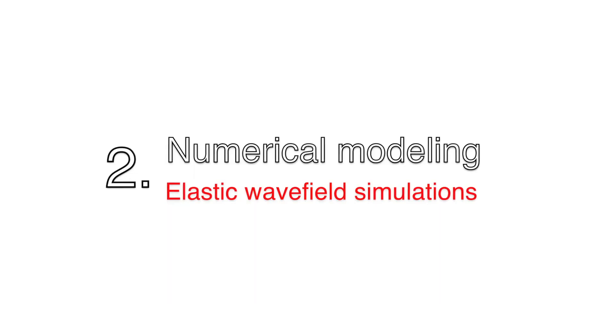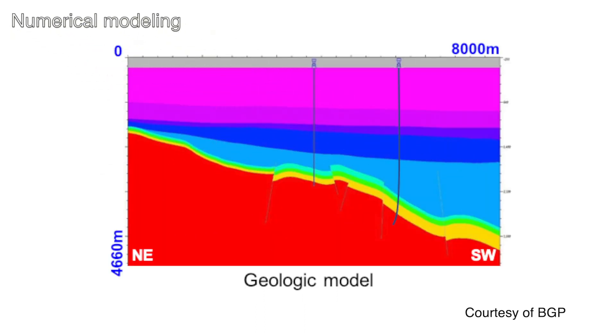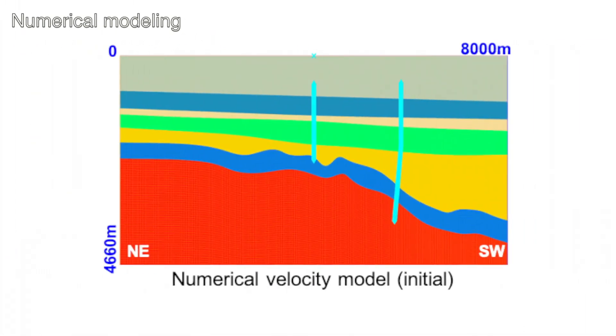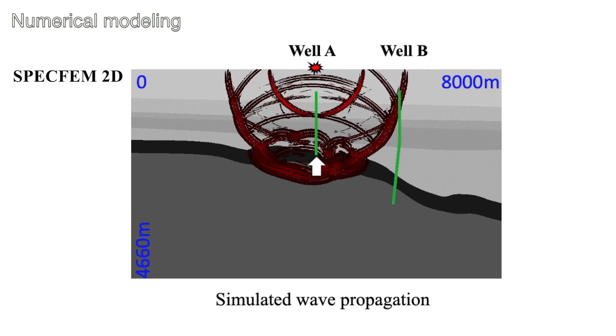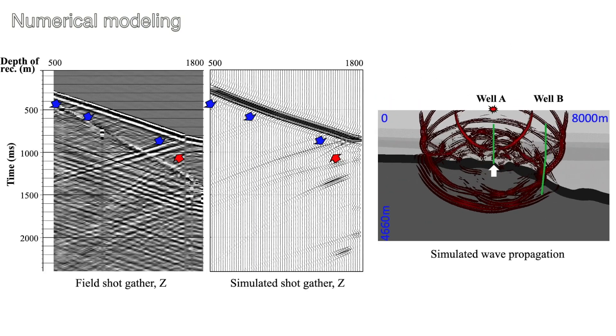We first run the numerical simulations to understand the elastic wave field. Based on the geologic model interpreted from the early surface seismic image, as well as the velocity and density surveys, a simplified model was built to feature the general structure. We run elastic wave field modeling using spectral element method.